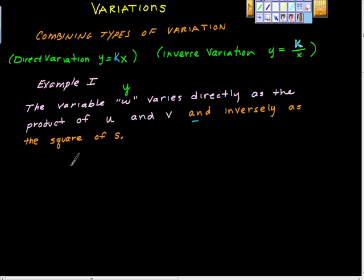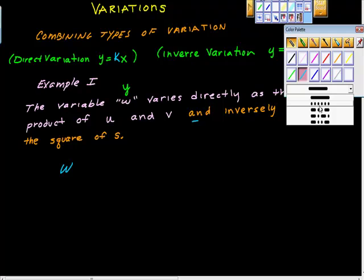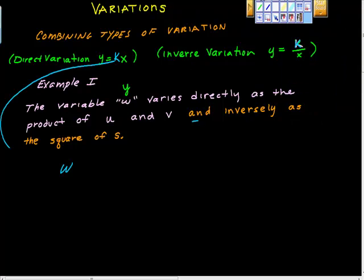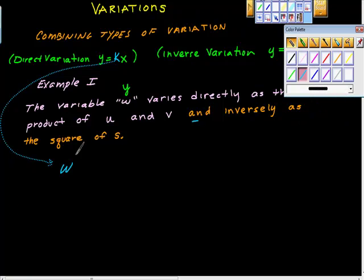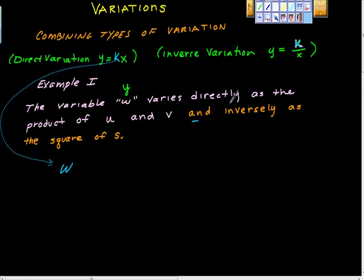So I'm going to set that up. For our direct variation, this is us doing our direct variation. We know that we get k, our constant of variation, and there's u and v. So that takes care of the general form of the first part of the question.